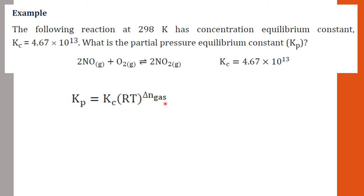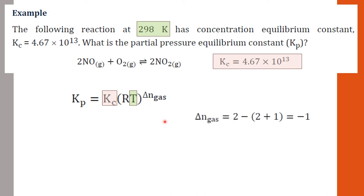We need to find ΔnGas. Looking at the reaction, the product side has 2 moles of gas, and the reactant side has 2 plus 1 equals 3 moles of gas. Therefore ΔnGas = 2 − 3 = −1.